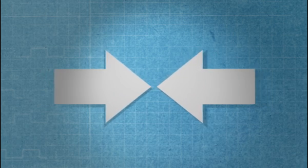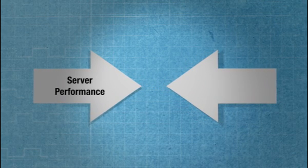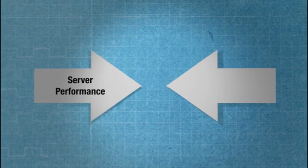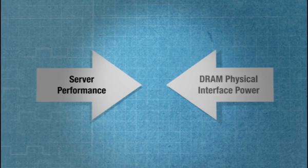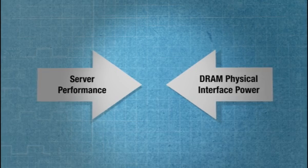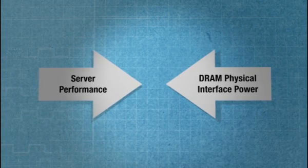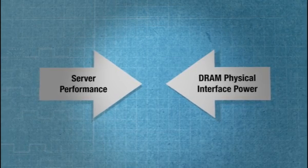One of the bottlenecks that we've identified to achieving really high performance at really low power is the power efficiency of the physical interface on the DRAM chip itself. And this means that your power efficiency of your system has to increase by an order of magnitude in order to get that performance without blowing your power budget.